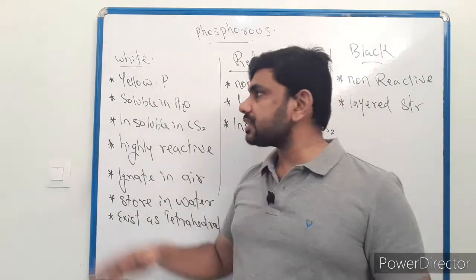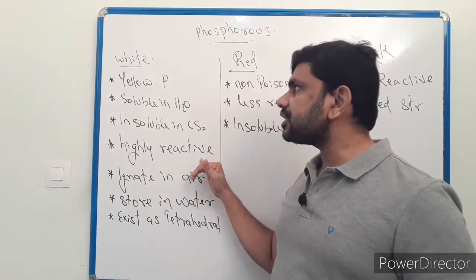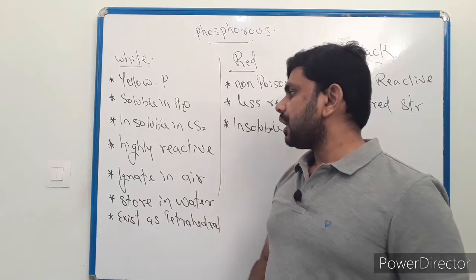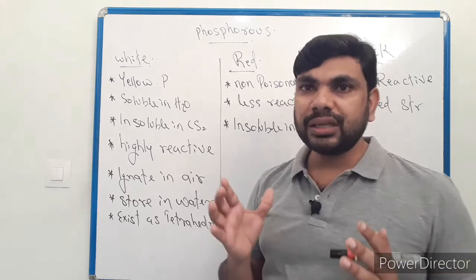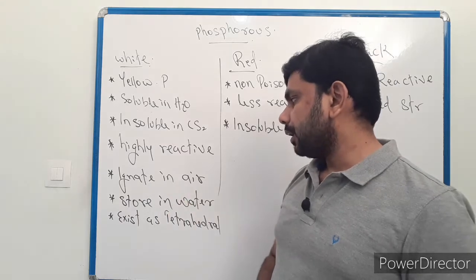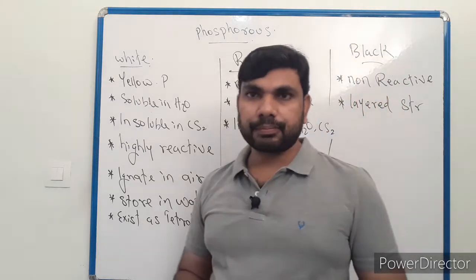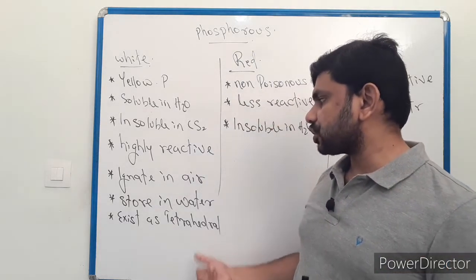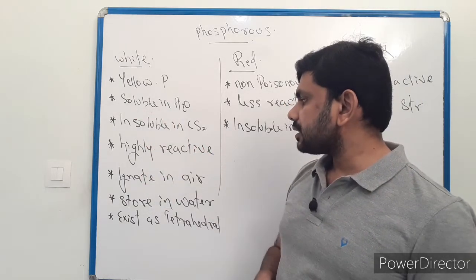White phosphorus, also called yellow phosphorus, is soluble in water and insoluble in carbon disulfide. It is the highly reactive form of phosphorus. It ignites in air and exists in a tetrahedral structure.